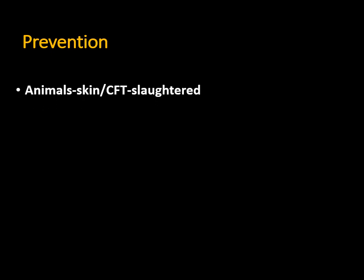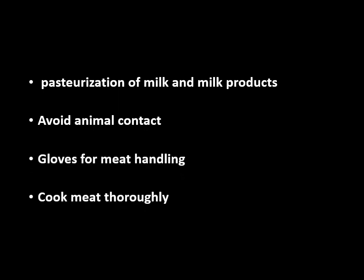For prevention, since brucellosis is a zoonotic infection, we must first identify infected animals using skin test or complement fixation test, then slaughter them. A vaccine is also available for animals. From the human perspective, pasteurization of milk and milk products is essential. We should avoid animal contact, wear gloves while handling meat, and cook meat thoroughly.